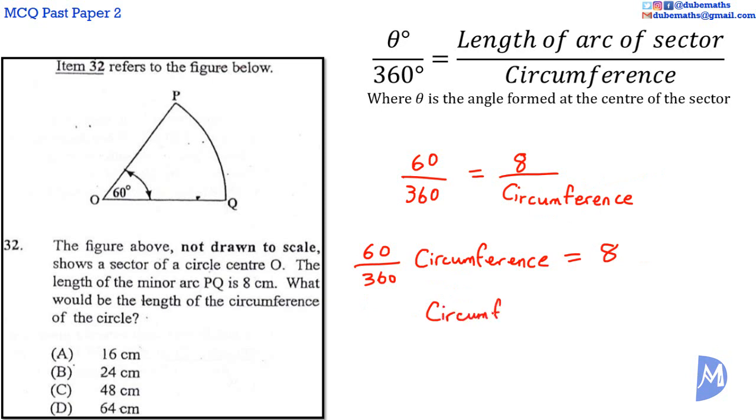We get the circumference equals 8 multiplied by the reciprocal. Canceling, 360 divided by 60 equals 6. 8 multiplied by 6 is equal to 48. The answer is C.